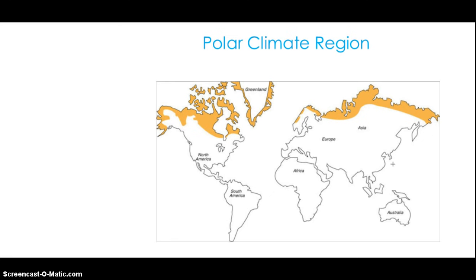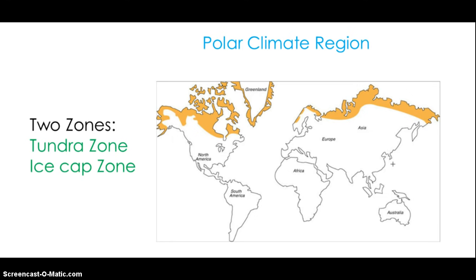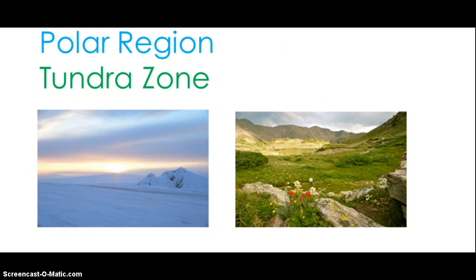The polar climate region has two zones: the tundra and the ice cap. The tundra is milder than the ice cap zone. Tundra climate is mainly found along the coast of the Arctic Ocean and is a transition climate between the ice cap and the subarctic zone. Tundra areas experience a very harsh winter and a cool summer. During the summer, much of the snow and ice melts, forming soggy marshes and bogs. However, the deeper parts of the soil stay frozen even through the summer — a layer called permafrost, as in permanent frost. The permafrost prevents melted snow and ice from draining into the groundwater, so marshes and bogs form.